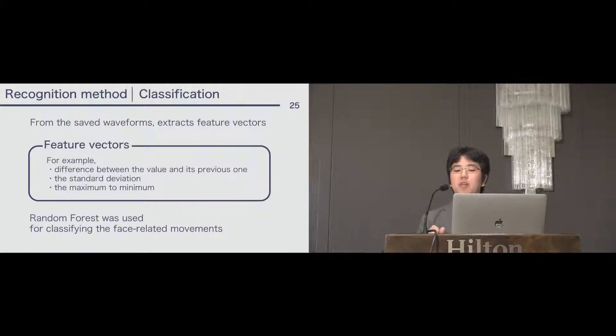From the saved waveforms, we extract feature vectors. The feature vectors is, for example, difference between the values and its previous one, and the standard deviation, the maximum to minimum. In our development, random forest was used for classifying the face-related movements.